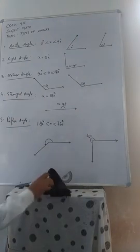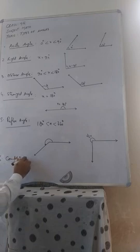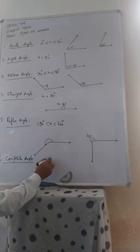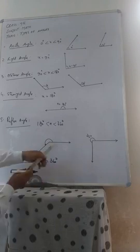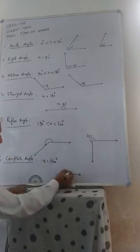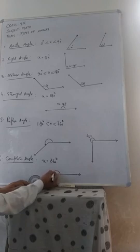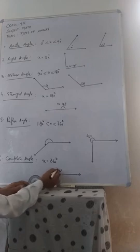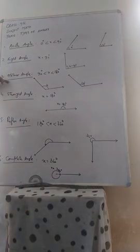And that angle is called complete angle. An angle whose measure is equal to 360 degree. So here we draw this complete angle — it is an array, here is our end point. Complete means it is a circle, and it is equal to 360 degree. So these are the types of angles: acute angle, right angle, obtuse angle, straight angle, reflex angle, and complete angle. Thank you.